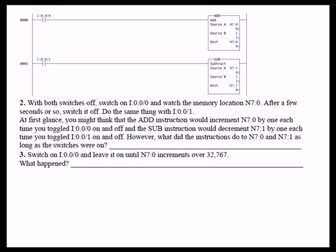However, what did the instructions actually do to registers N7:0 and N7:1 as long as the switches were on? We basically expected that every time you toggle memory location I:0/0 or I:0/1, the instruction would execute once. In other words, you'd take N7:0 and add one, store it in N7:0, then the next time you toggle it, N7:0 is now one, you add another one to get two. We expected the same for the subtract instruction.